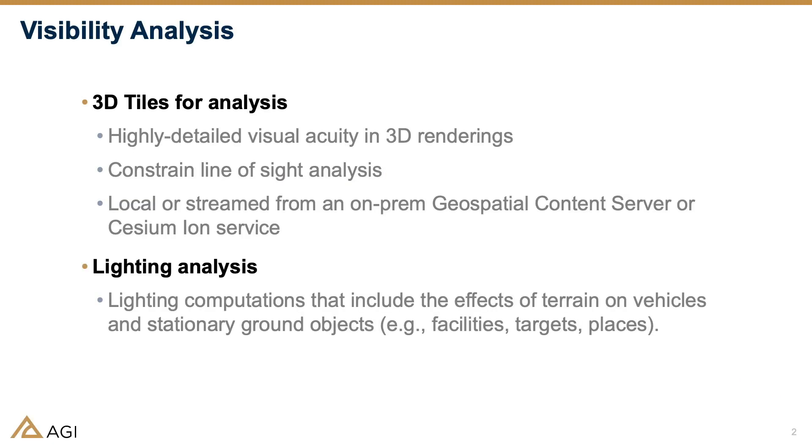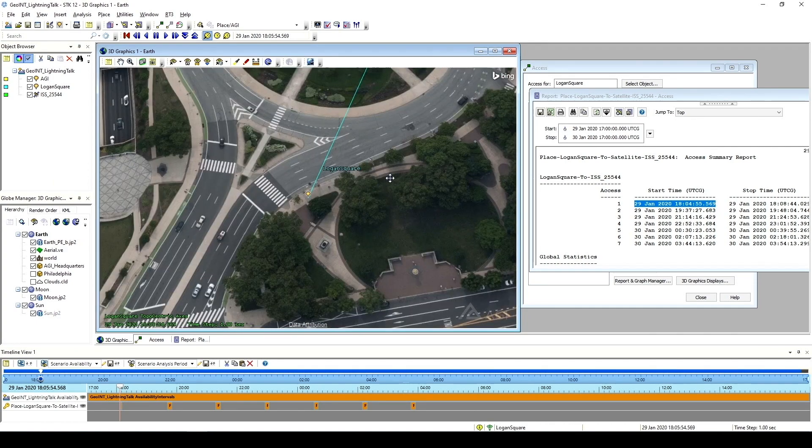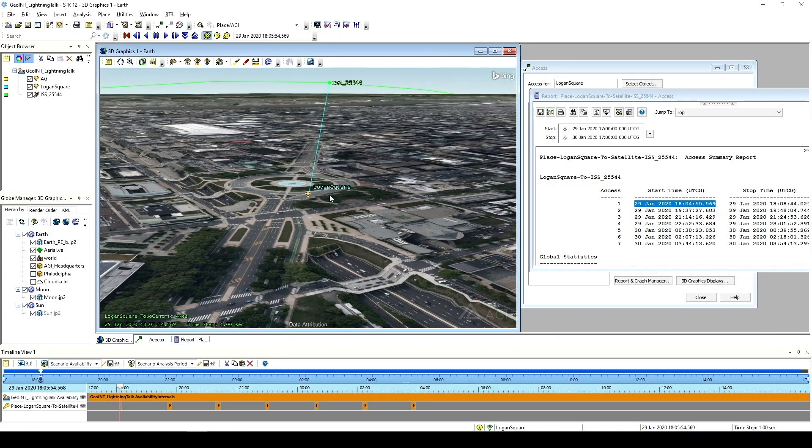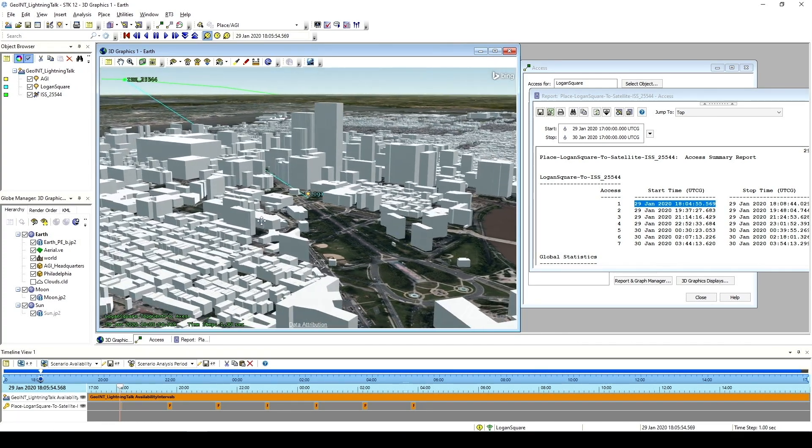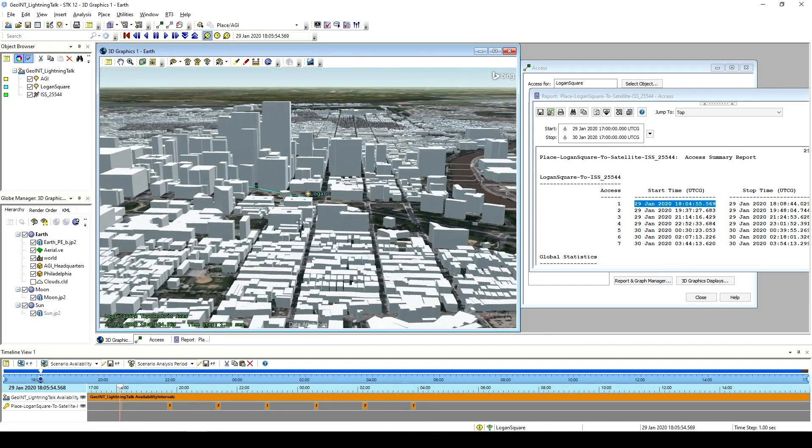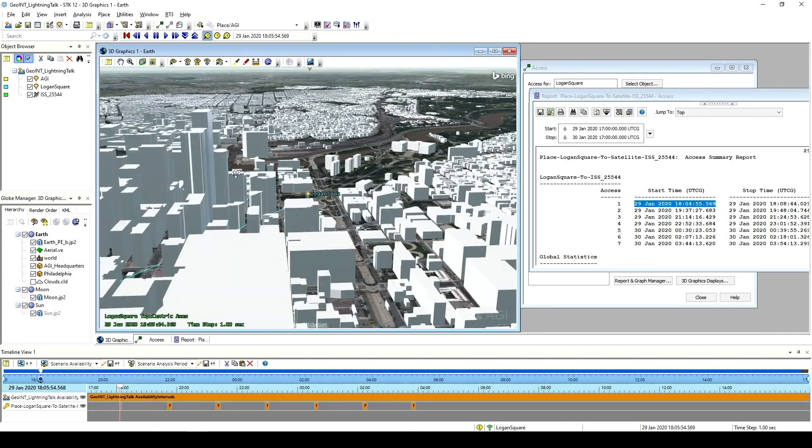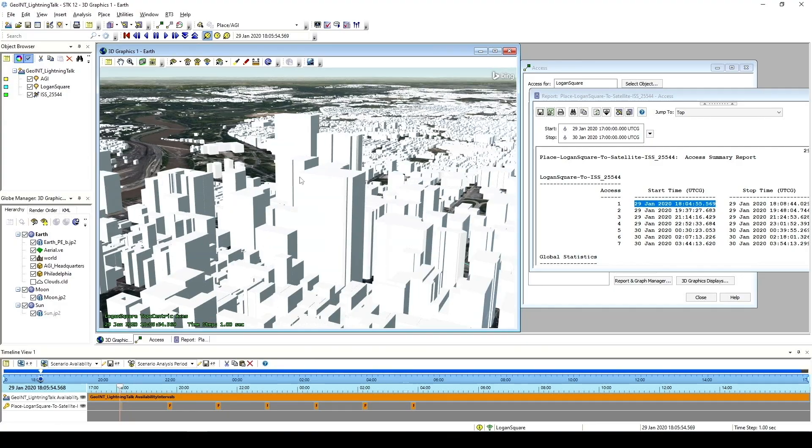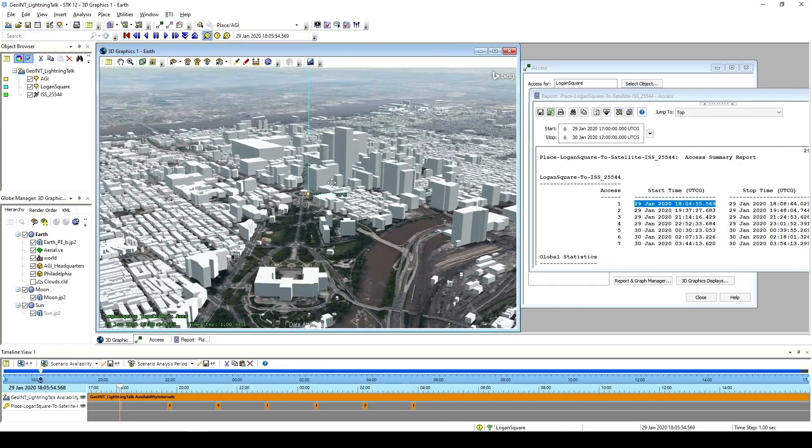First on the list is 3D tiles. If you recall in the previous release of STK, we added the ability to do a highly detailed visual rendering in our 3D environment with the addition of the ability to take advantage of 3D tiles in your modeling environment. With the release of 12.0, we've now added the ability to use those 3D tiles as a constraint in any of your line of sight analysis.